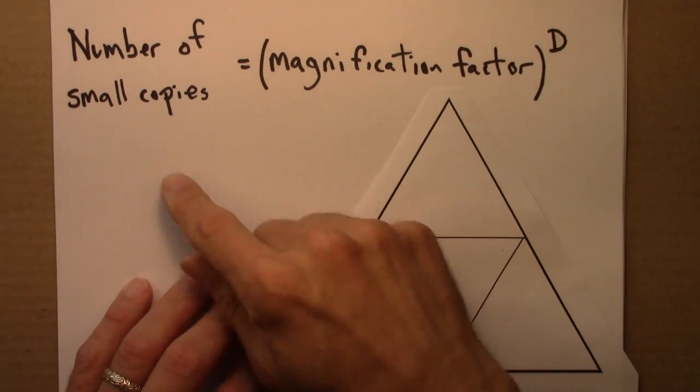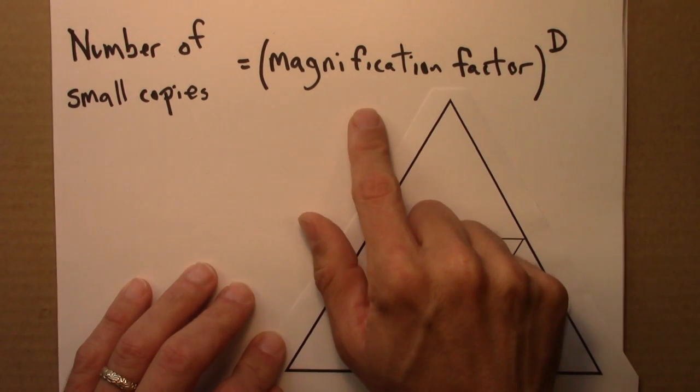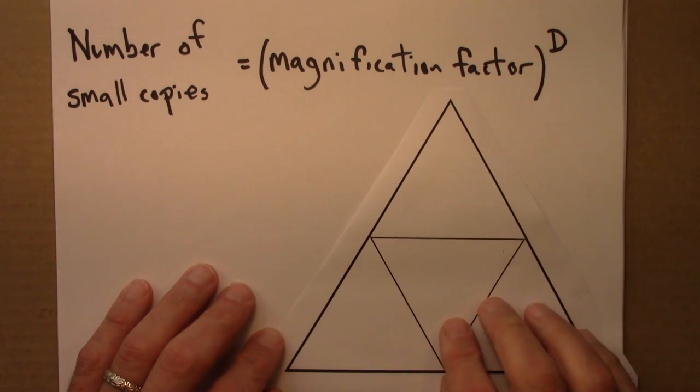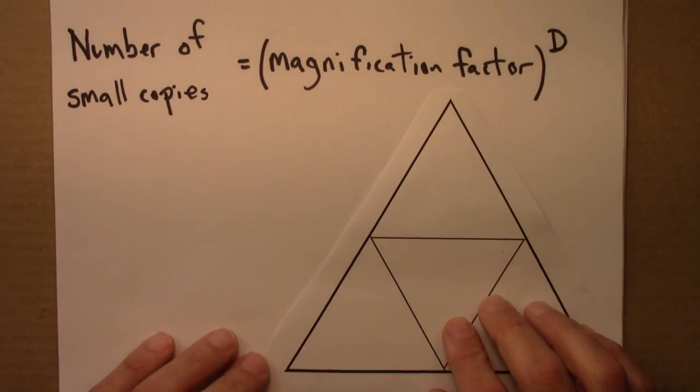So here's the equation we're working with. Number of small copies equals magnification factor to the d power, and d is the self-similarity dimension. That's what we're interested in.